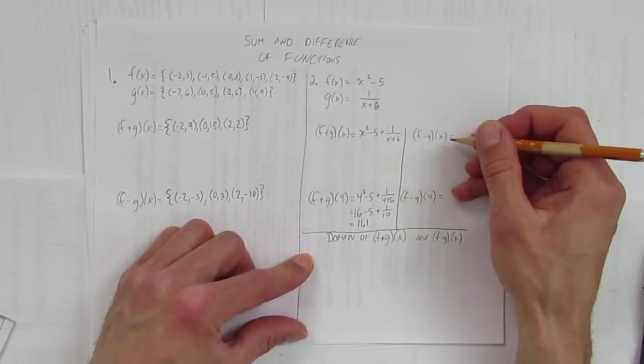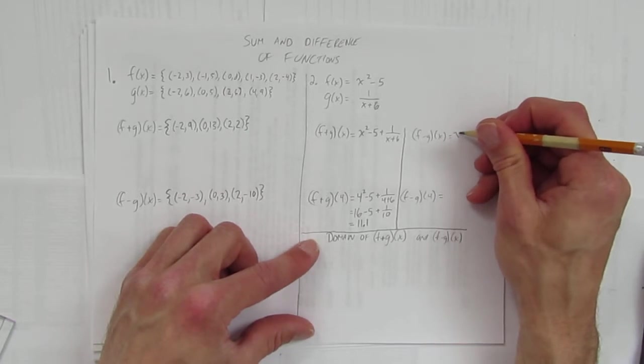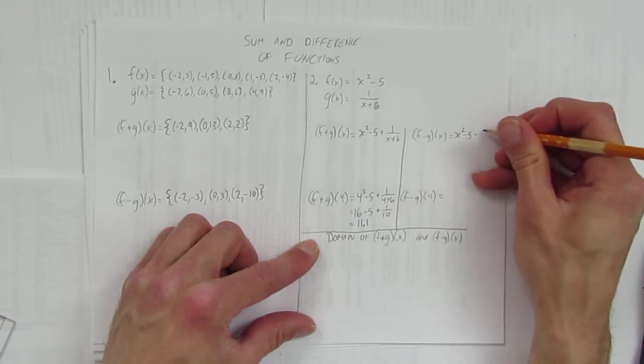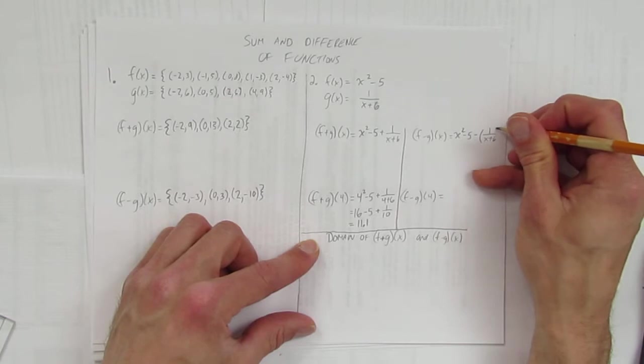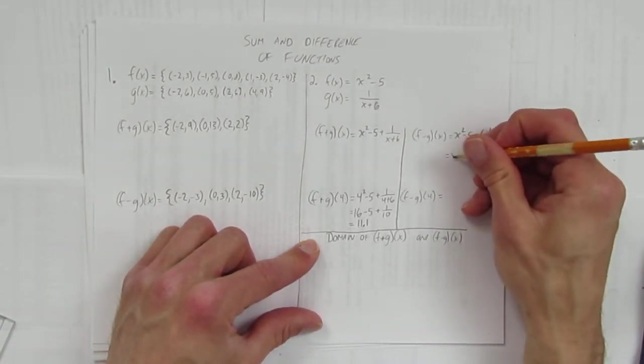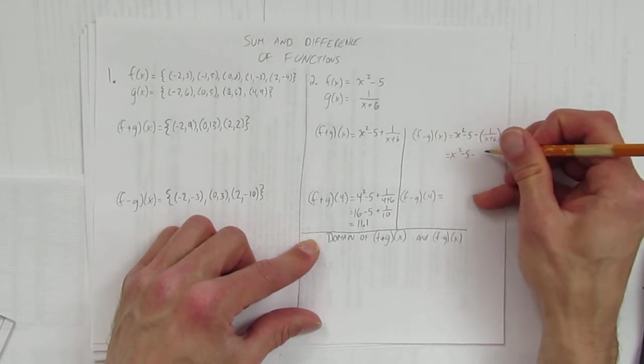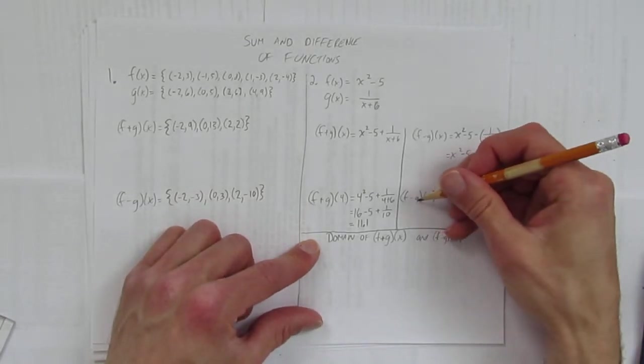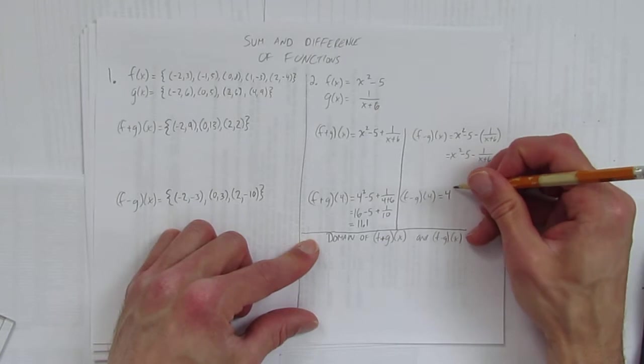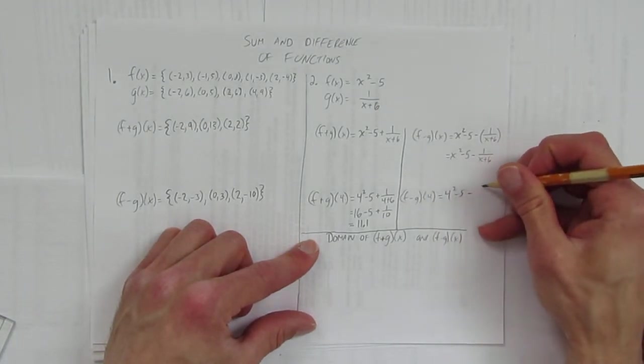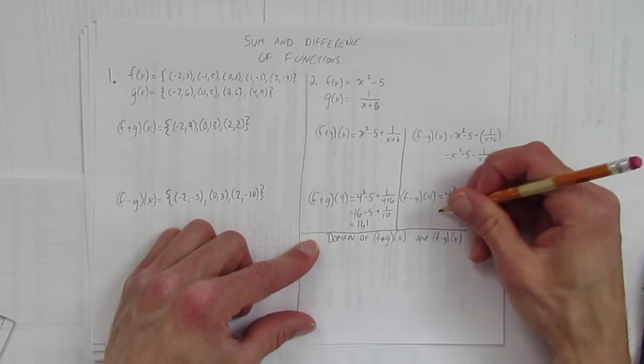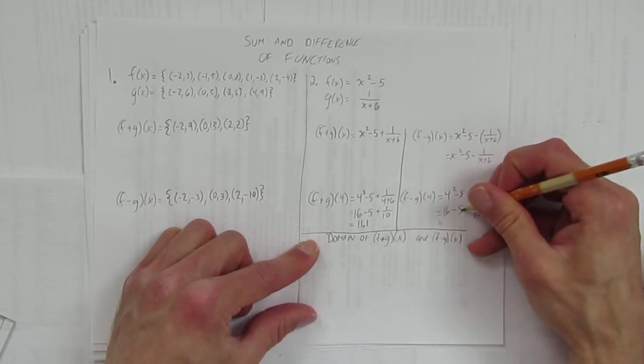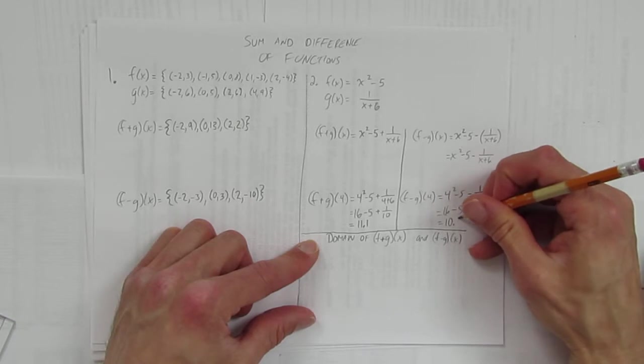Same thing if you're doing (f-g)(x). The first thing you do is just take the function, the first one f(x), and subtract the second function. I'm going to put it in brackets: minus 1/(x+6). Did you need it in brackets? No. We should probably just write it x² - 5 - 1/(x+6), but I wanted to make sure I subtract this whole fraction. Because when I sub in, for example, (f-g)(x) of 4, we just sub in 4. Very similar to the last question except now we're subtracting this 1/10. And we get 16 - 5 - 1/10, which of course is 11 take away 1/10, which is 10.9.